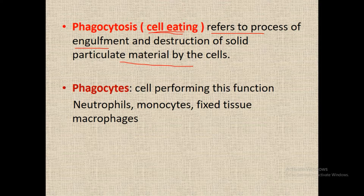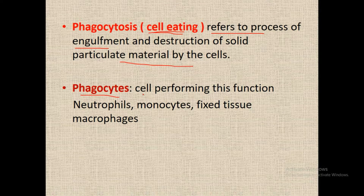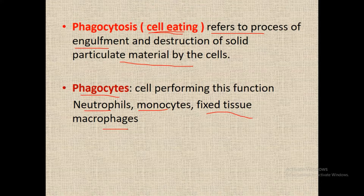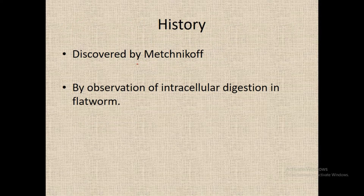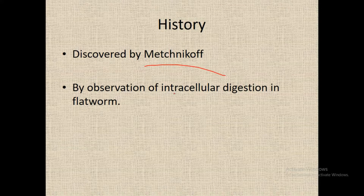The phagocyte cells performing this function are the neutrophils, monocytes, and fixed tissue macrophages — these three cells perform the function of phagocytosis. Historically, it was discovered by Metchnikoff through observation of intracellular digestion in flatworms.